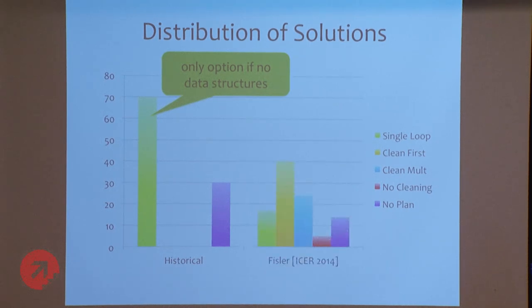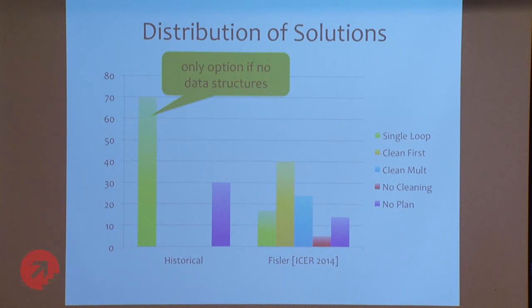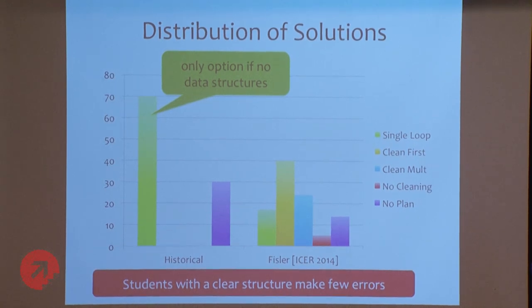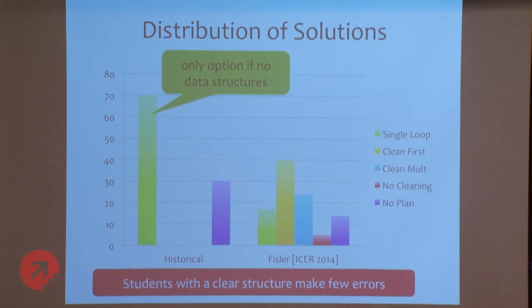My data with the study we did with functional programmers — the most common solution was cleaning first. In our case they were not doing take-while because we were in Racket, which didn't have take-while, but it was the same idea. We had several who did clean multiple, then single loop — which is the least popular of the three that get somewhere. We had a handful who just skipped the cleaning and wrote average, and then the Captain Kirk approach: change the problem, make it simpler. We still have some who don't get anywhere. But the interesting finding is that students in our study who had a clear structure — one of those three left bars — had very few errors. Using the same error categories from earlier studies, our students were averaging 0.7 errors per student as opposed to four to six.